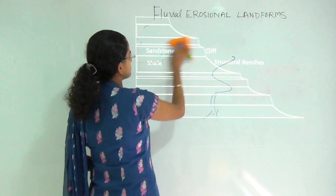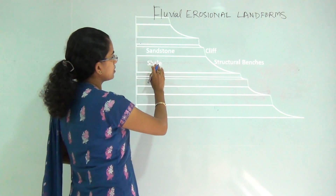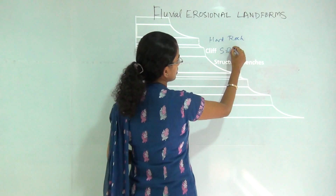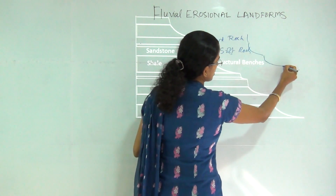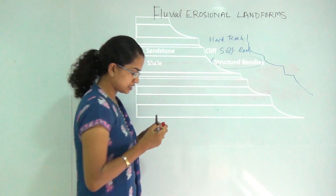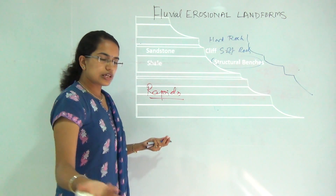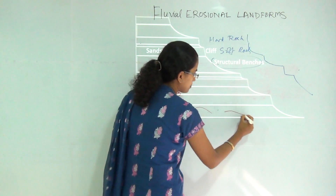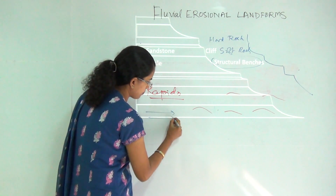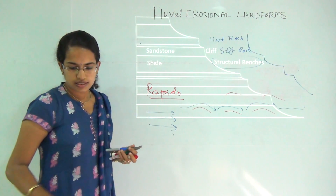Next is the structural bench. What happens is you have an alternating arrangement of hard rock and soft rock — sandstone as a soft rock alternating with hard rock. This kind of erosional cutting takes place forming benches, and this feature is known as the structural bench. Another important feature is rapids. Rapids happen when the river is flowing and below the river you have small hard protrusions or small hard rocks. When the water flows, rather than flowing in a normal parallel fashion, it creates a turbulent pattern across the hard rock sections. This is known as rapids.